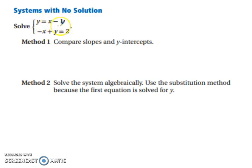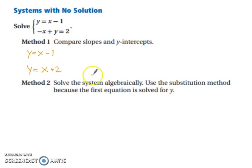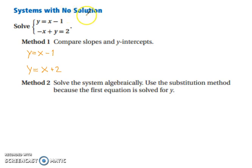Our first equation is already in slope-intercept form, so let's rewrite that. Now let's look at the second equation. We need to move the negative x to the other side, so we have y equals x plus 2. Notice how the y-intercepts are different and the slopes are the same — this means the two lines are parallel and they will never intersect. Therefore, no solution, because your solution comes from when the two lines intersect.